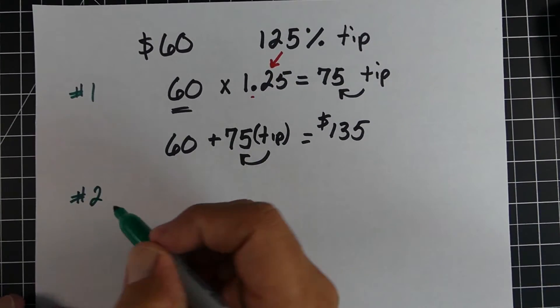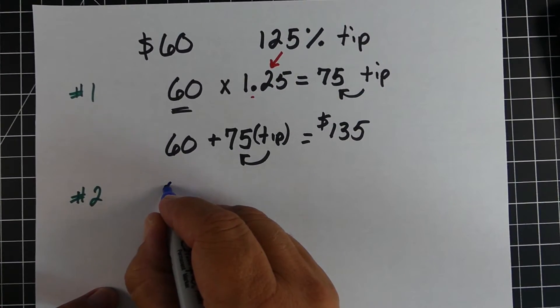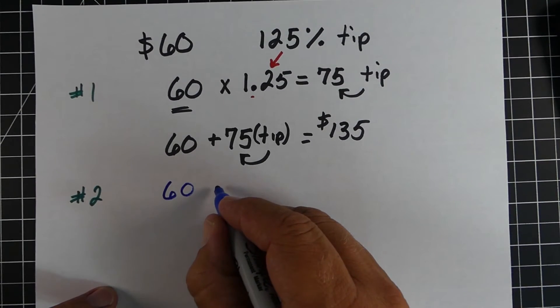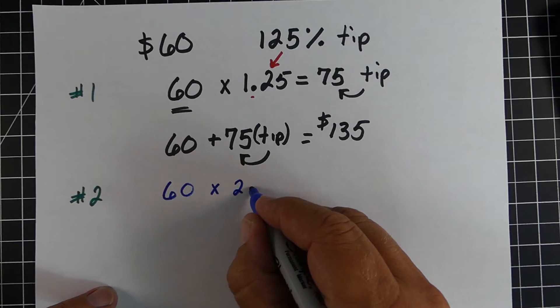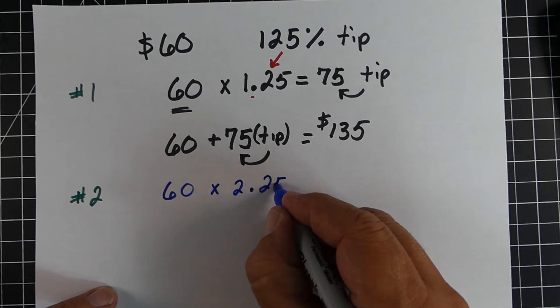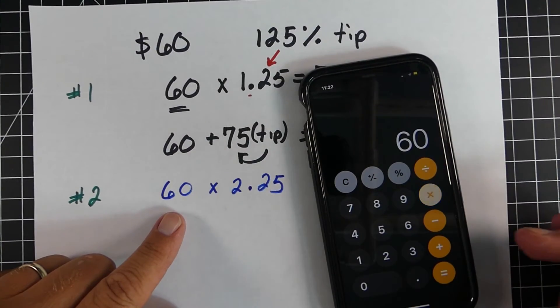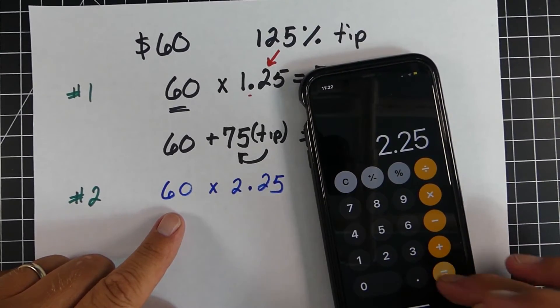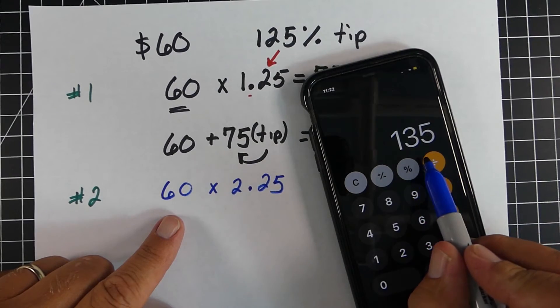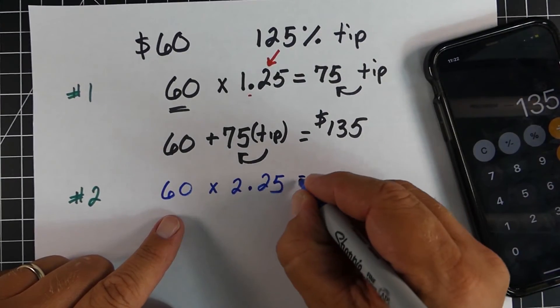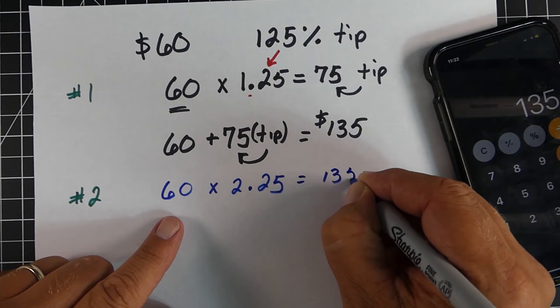Now using method two, we're going to take the $60 again. But this time, we're going to multiply 2.25. And when we do that, we should end up with the same answer, so let's kind of double check our work, 60 times 2.25. And sure enough, we're getting $135, just like we did with the first method. And so both ways, $135.